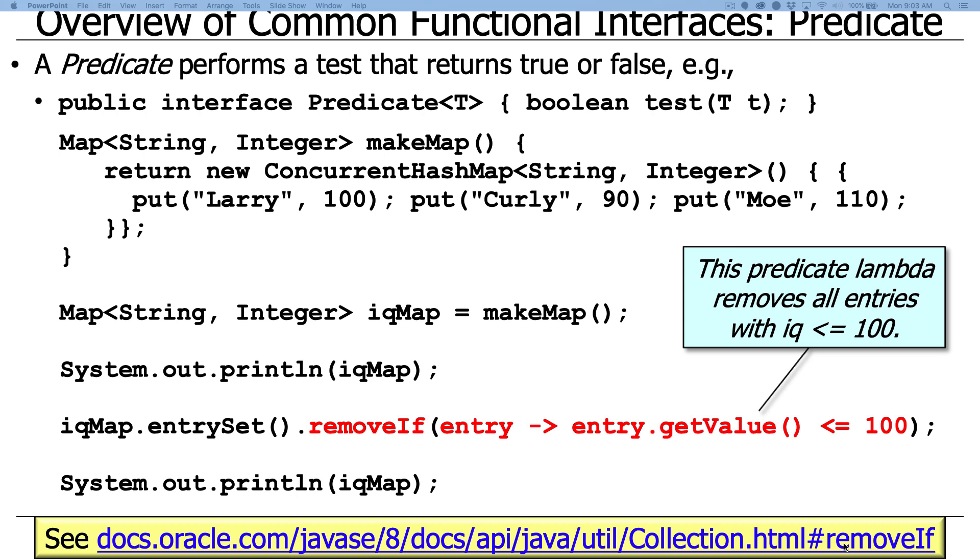So what I want to focus on here is this method called removeIf. And what removeIf works on, as you can see here, is it takes the IQ map, gets its entry set. The entry set is simply the set of key value pairs in the map. And what it's going to do is it's going to remove any entry in the map whose value, whose IQ, is less than or equal to 100.